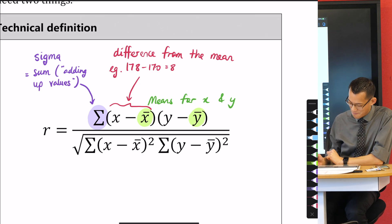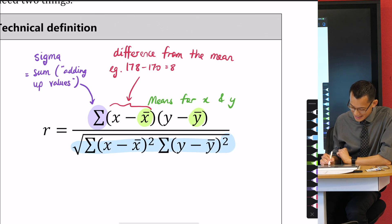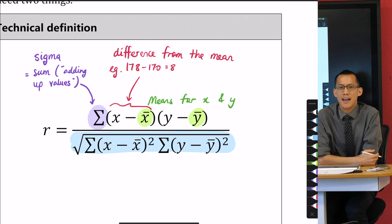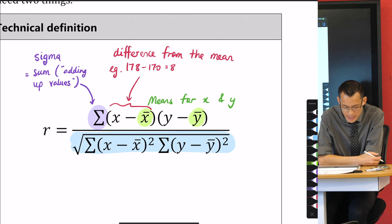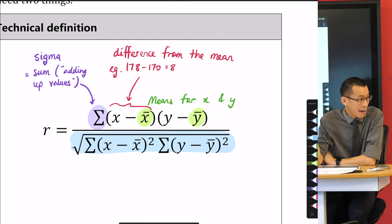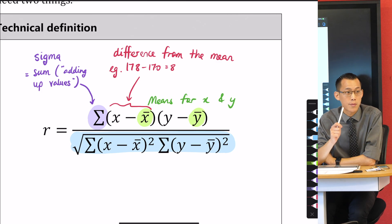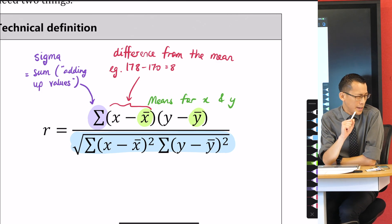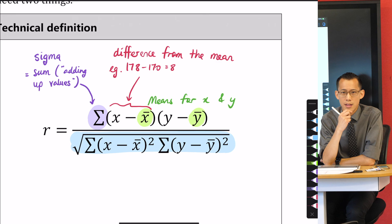Now let's have a look at this denominator. What on earth is this? Just have a look at it. The first thing you can see is that it shares a lot in common with the numerator. You're still adding up a bunch of things, you're still calculating differences from the mean.